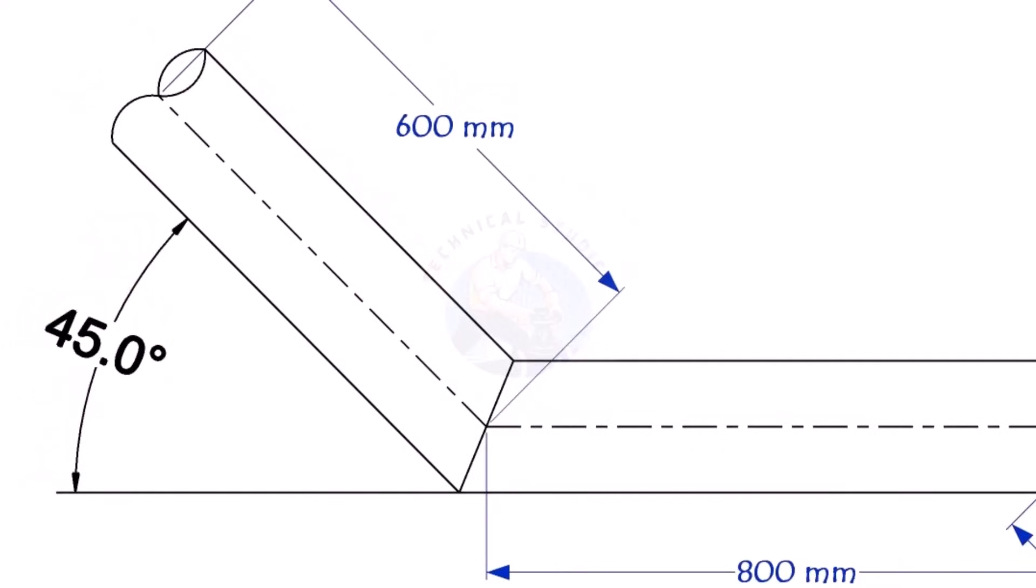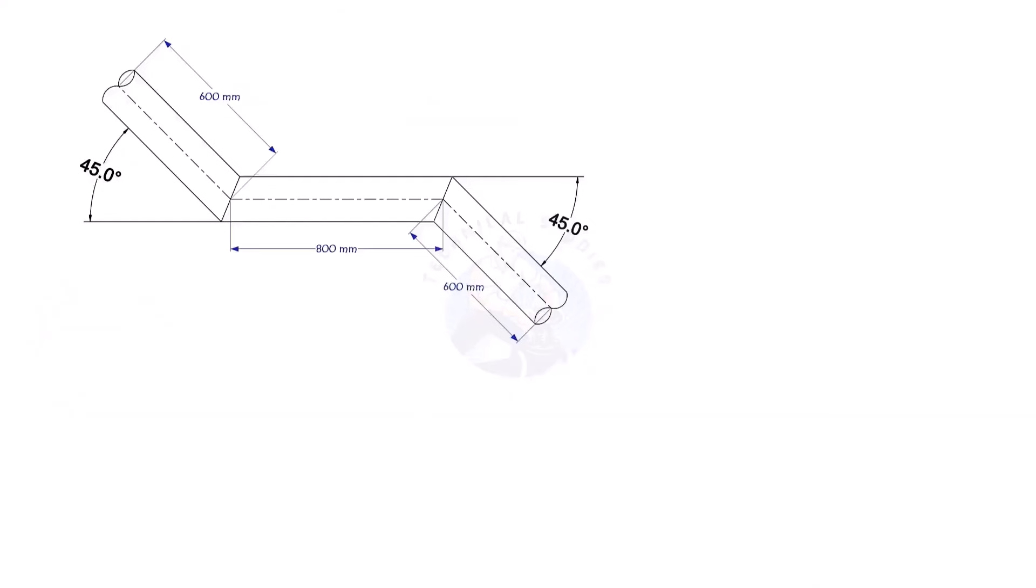This method is suitable for calculating the cutback for any degree. The outside diameter, OD, of a 6 inch pipe is 168.3 millimeters.